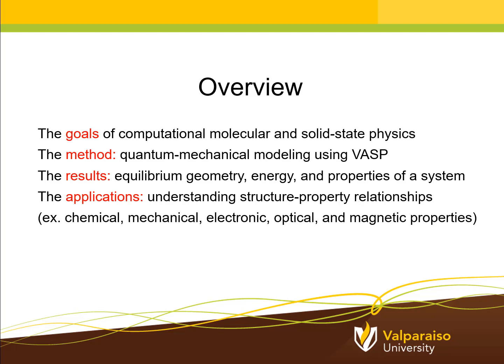First, an overview of what I hope to achieve in this video. I want to talk about the goals of computational molecular and solid-state physics, then the method that VASP uses to do quantum mechanical modeling of systems, including molecules and solids. Then we'll move on to the results. When a VASP calculation is completed, we obtain the equilibrium geometry of the system, its energy, and various properties that we can calculate. And finally, what are the applications? What types of research projects can we carry out with VASP? These primarily fall into the area of understanding the relationship between the structure of the physical system and the properties that it has.